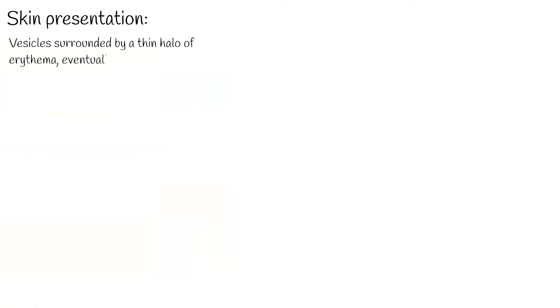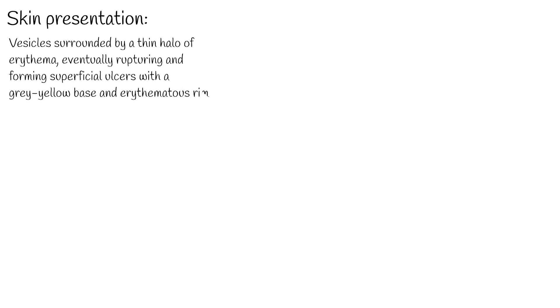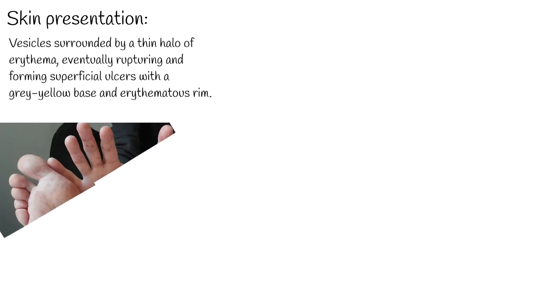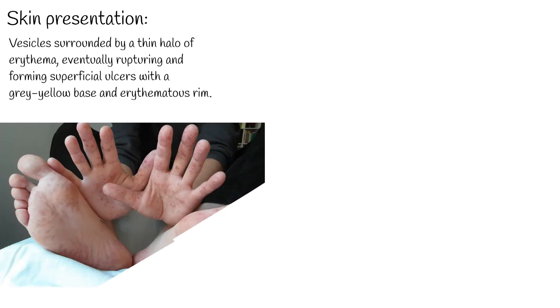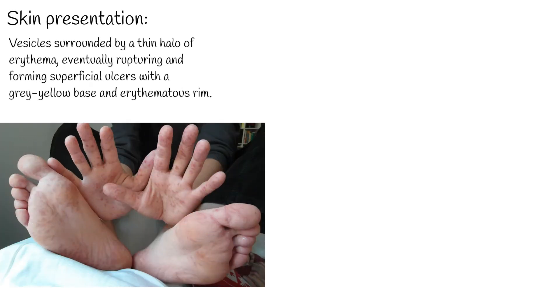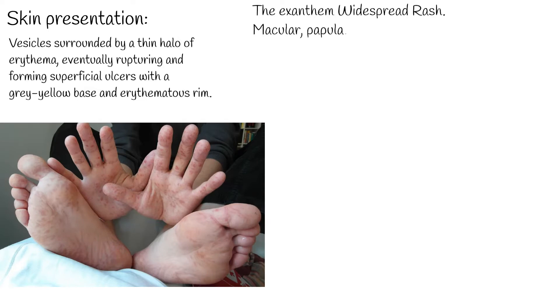The skin presentation of hand, foot, and mouth disease consists of vesicles surrounded by a thin halo of erythema, eventually rupturing and forming superficial ulcers with a grey-yellow base and erythematous rim. The exanthem can be macular, papular, or vesicular.